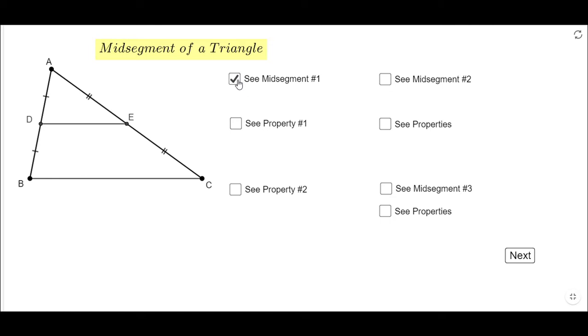That will show me a midsegment of this triangle, the midsegment DE. The midsegment is the segment created by these two endpoints. This endpoint D is the midpoint of segment AB, and you notice the fact that AD is congruent to DB. That's the reason this is the midpoint. And also, point E is the midpoint of AC.